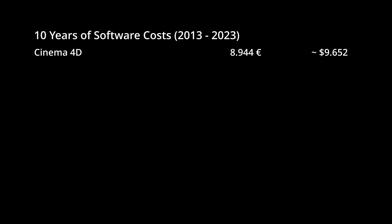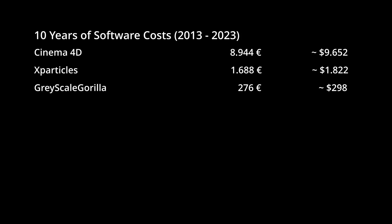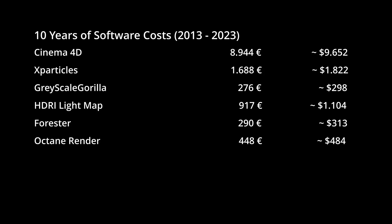When working with Cinema 4D, I relied on X-Particles, which cost me about $1,820 over 10 years. Additionally, I used Grayscale Gorilla tools like the HDRI Link plugin, totaling around $300. HDRI Light Studio, which accelerated my workflow, cost about $1,100. The Forrester plugin, combined with Octane Renderer for natural renderings, amounted to approximately $800. Overall, from 2013 to 2023, I invested approximately $13,500 in Cinema 4D and its plugins.